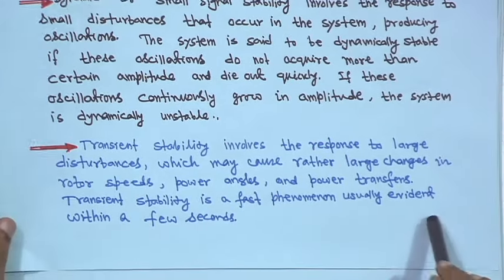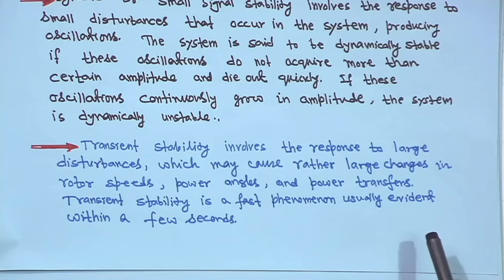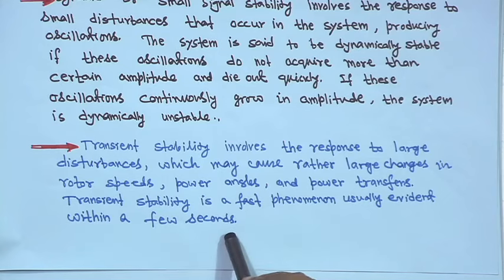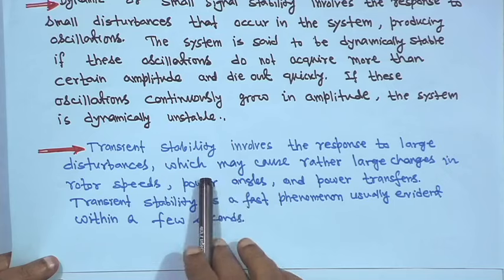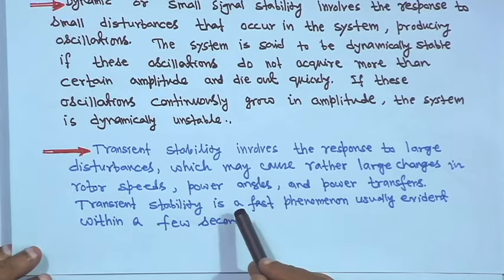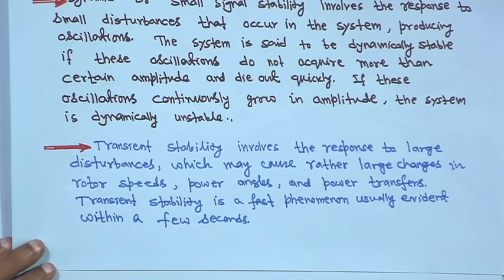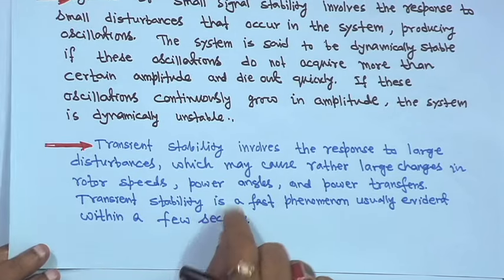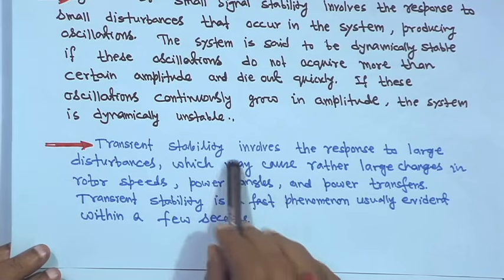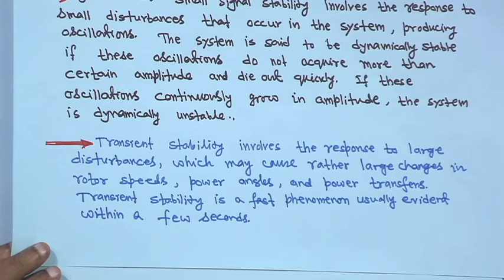Transient stability involves the response to large disturbances, which may cause rather large changes in rotor speed, power angles, and power transfer. Transient stability is a fast phenomenon and usually evident within a few seconds. Among these, transient stability is very severe because it is due to a large disturbance — for example, a three-phase fault or line-to-ground fault — causing large changes in rotor speed, power angles, and power transfer. For example, in a double circuit line, if there is a fault in one line, power transfer capability will change.